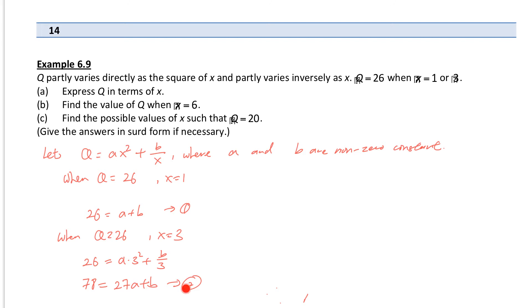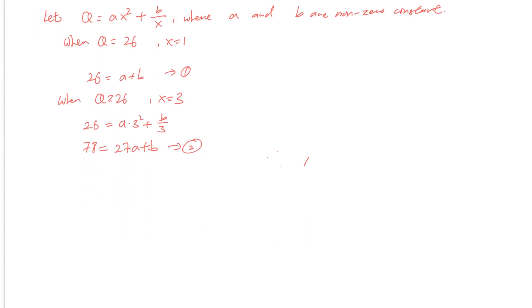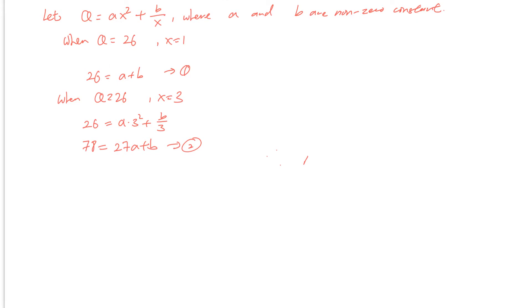Then equation 2 minus equation 1 — you can eliminate b. Left-hand side: 78 minus 26 equals 52. And 27a minus a equals 26a. b minus b equals 0. So you can find a. Then b equals 24.